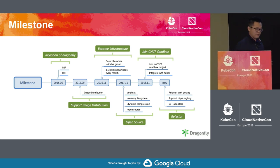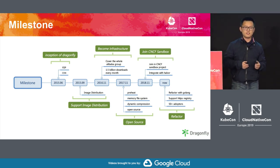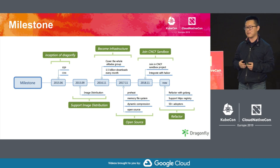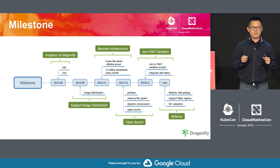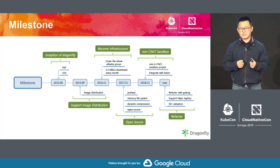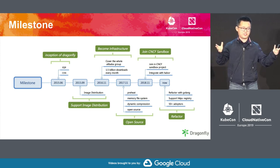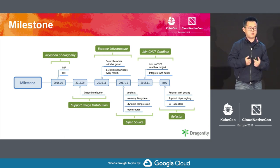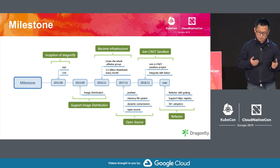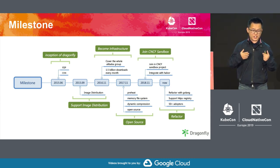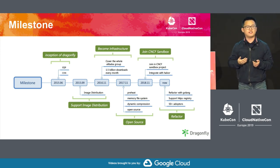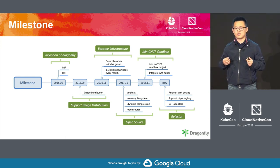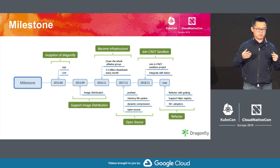In November 2017, we integrated with Harbor. Harbor is used to store and manage images, while Dragonfly does the distribution. We worked on preheating images from Harbor to Dragonfly — to save time when distributing images — making the process more seamless and efficient.